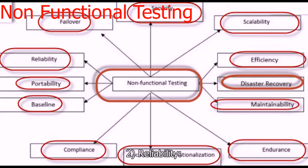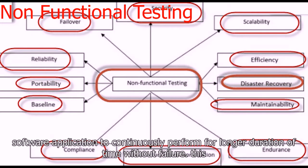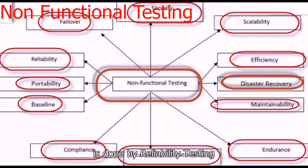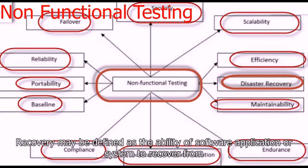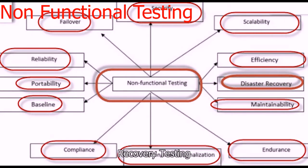Next comes reliability testing. Reliability may be defined as the availability of a software application to continuously perform for a longer duration of time without failure. This type of checking is done by reliability testing. Next comes recovery, which may be defined as the ability of a software application or system to recover from failure and migrate to disaster infrastructure in case of any system failure. This is done by recovery testing.